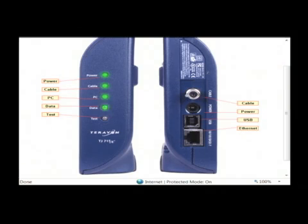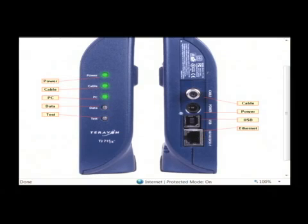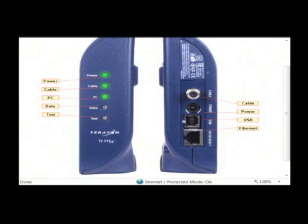What the cable modem outputs is a 10BaseT internet connection — actually 10 or 100, and they even go up to gigabit now — via an ethernet cable or a USB cable. You can plug a USB into this if you just want to connect a single home computer, though your computer would need to be near the cable modem, as the USB cable is about six feet long usually.